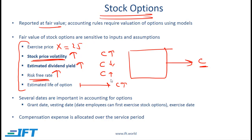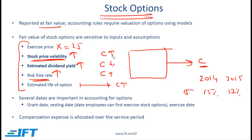From an exam point of view, you might see something like this: in 2014 a company assumed a volatility of 15%, and then in 2015 the assumed volatility goes up from 15% to 17%. What will happen to the estimated option price? The answer is that if this volatility number is going up, the option price is going up — in other words, the expense is going to be higher.